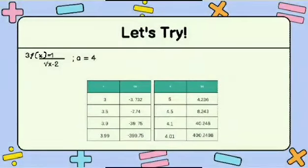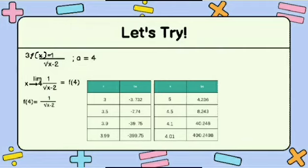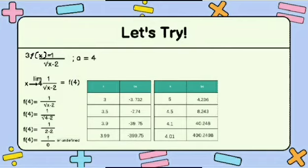For the last example, f of X is equal to 1 over the square root of X minus 2, where a is equal to 4. The limit of 1 over the square root of X minus 2 as X approaches 4. The first thing we do is substitute X equals 4: 1 over the square root of 4 minus 2 equals 1 over 0, which is undefined. Since the value is undefined, we will check the limits using tables of values.